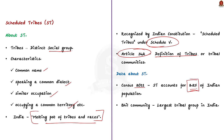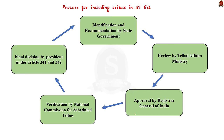The Bhil community is the largest tribal group in India. Now let us see the process of including tribes in the Scheduled Tribe list. Initially, the state government identifies the tribes that deserve ST status. Then it recommends the list to the Union government.